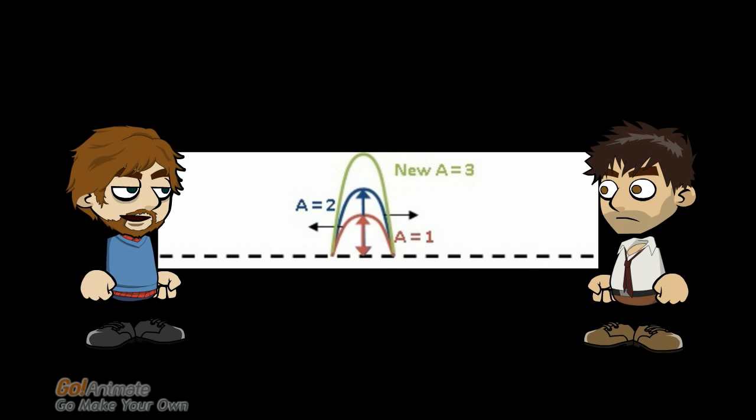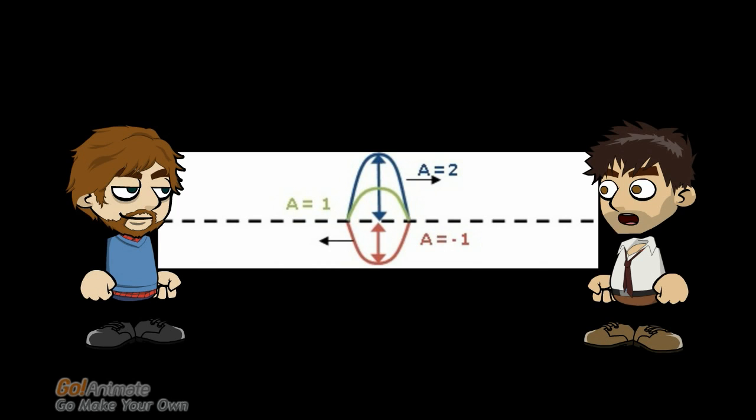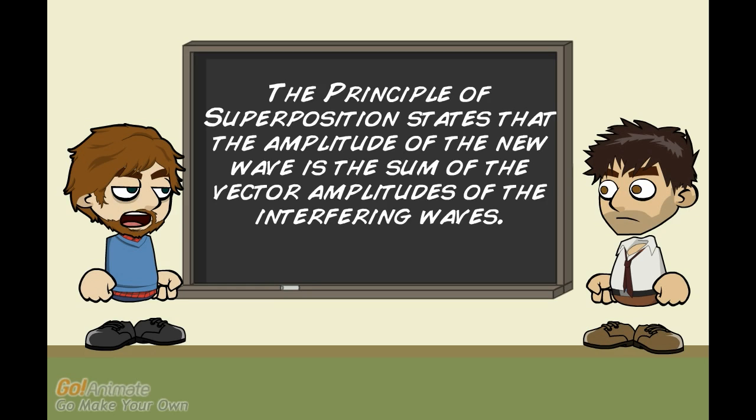When the two waves both push in the same direction we add the amplitudes to find the new wave amplitude. And when the two waves push in opposite directions we still add the amplitudes as if they were vectors. This rule, to find the new amplitude you add the vector amplitudes of the interfering waves, is called the principle of superposition.